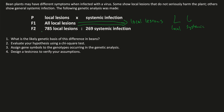To get the F2 generation, we cross the F1 with themselves, and we get a ratio of 785 local lesions to 269 systemic infections. What is the possible genetic basis? If we assume the F1 generation was all local lesions, what was probably happening was that we had two true-breeding parents crossed together — big L, big L crossed with little l, little l — giving us our big L, little l F1 generation, which would all show local lesions.